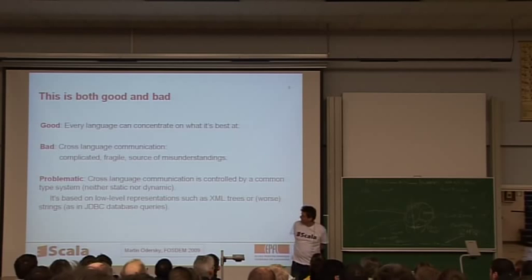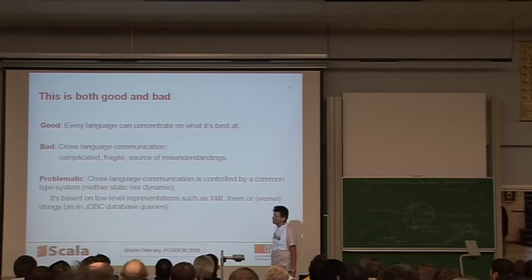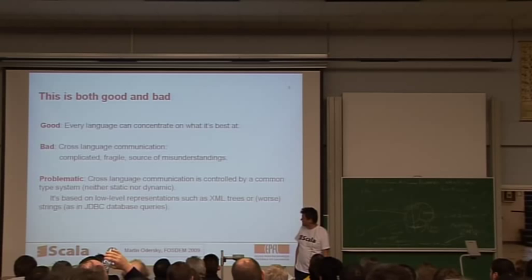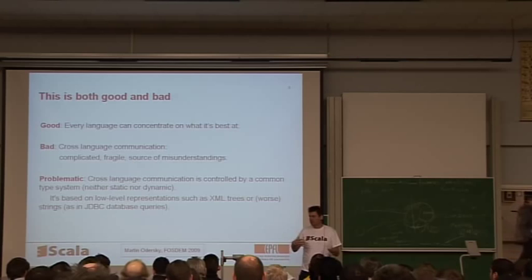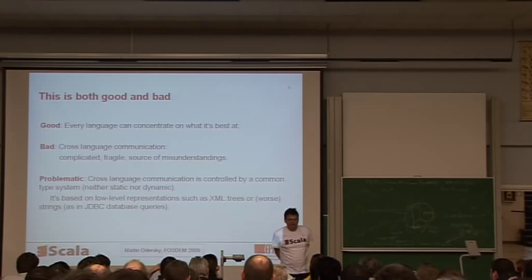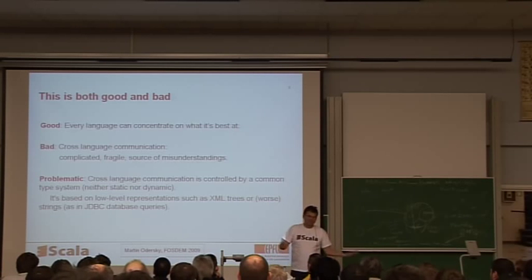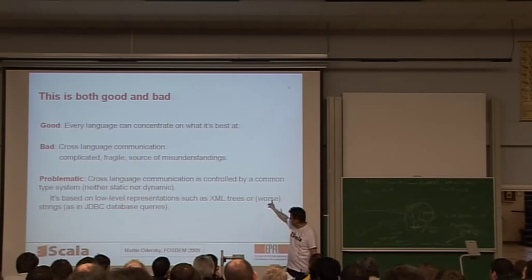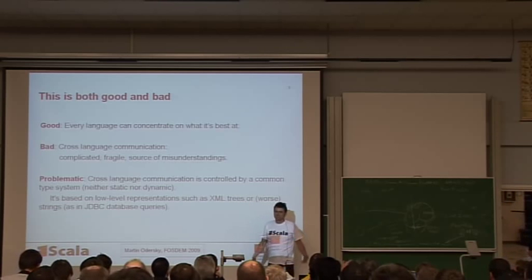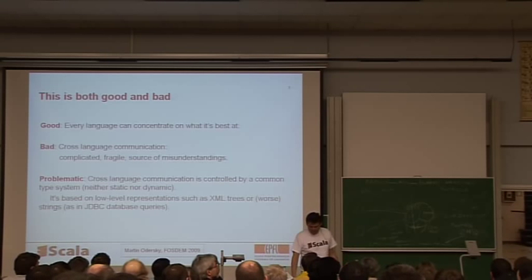The good part of it is that with all these little languages, each one can specialize on what it does best. The bad part comes when you have to do a large amount of cross-language communication because that tends to be complicated, in particular for deployment, tends to be fragile, and it tends to be a large source of misunderstandings if the conventions in these languages don't quite play well together. And one of the underlying problems is that usually for languages you have type systems, but when you do cross-language communication you don't have that anymore. Instead you communicate with conceptually very low-level things such as XML trees or even strings, and then typically that's where the errors creep in.